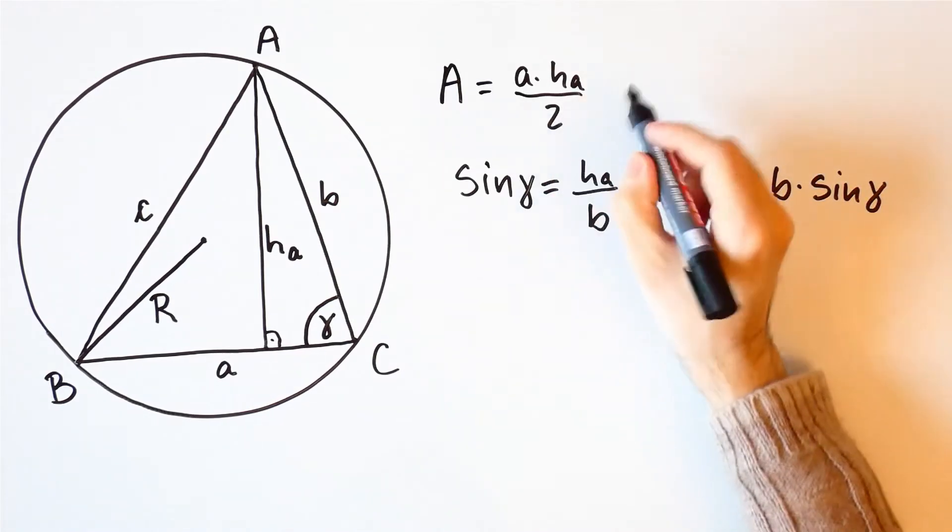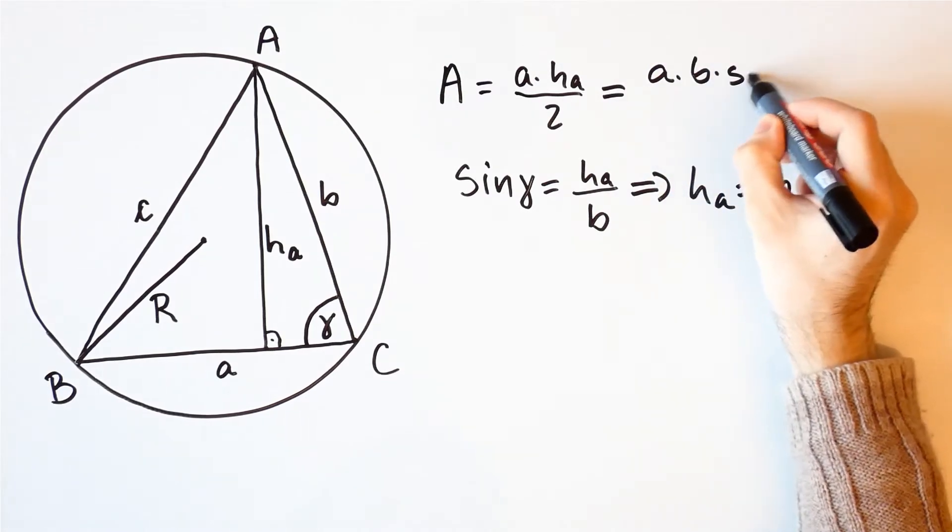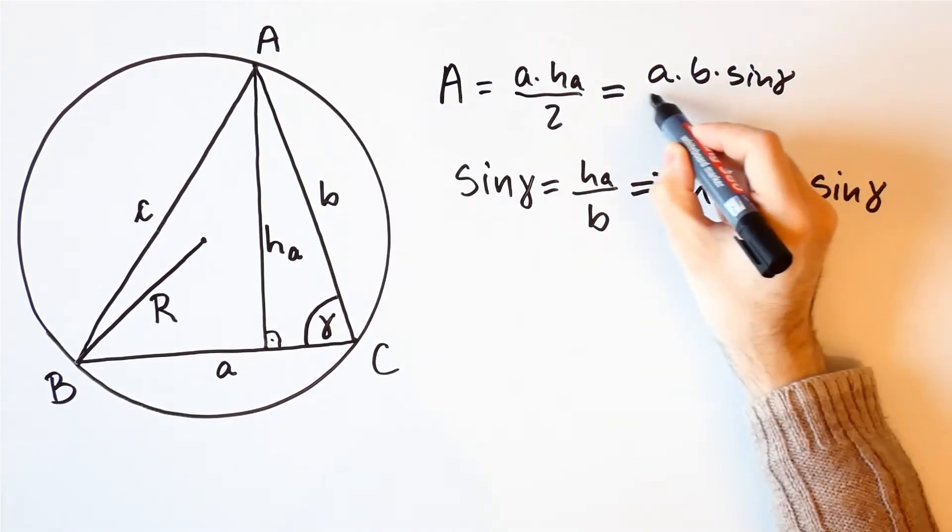So, the area is equal to A times B times the sine of gamma over 2.